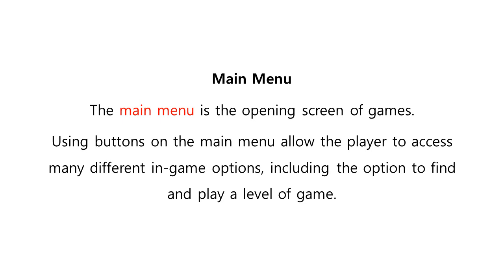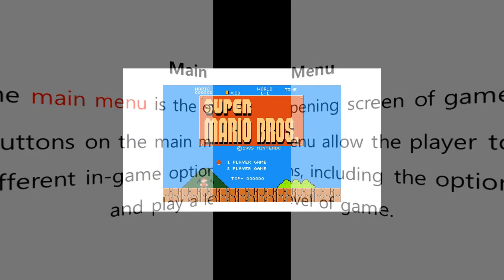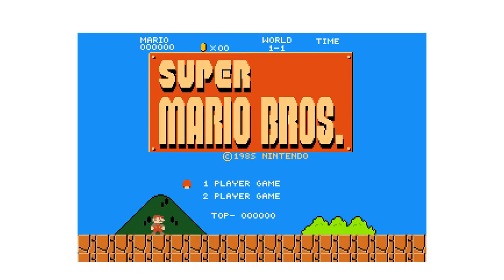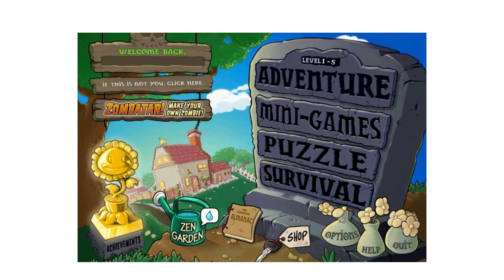Video games usually include a main menu as their opening screen. Using buttons on the main menu allow the player to access many different in-game options including the option to find and play a level of a game. It is used to start the game either from checkpoints or from the start, open other menus, view statistics that are accessed through a button, select options, switch between game modes, and more. This is the main menu for Super Mario Bros. game. This is the main menu for Plants vs Zombies.